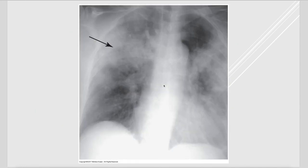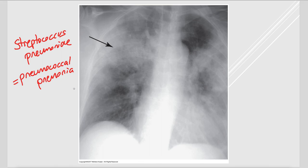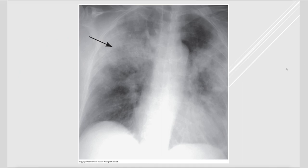Chest X-ray can show consolidation due to bacterial pneumonia. The number one causative agent of lobar pneumonia in adults is Streptococcus pneumoniae — also referred to as pneumococcal pneumonia. There are certainly other pathogens that can cause pneumonia — viruses, fungi, other bacteria — but Streptococcus pneumoniae is by far the most common in adults.